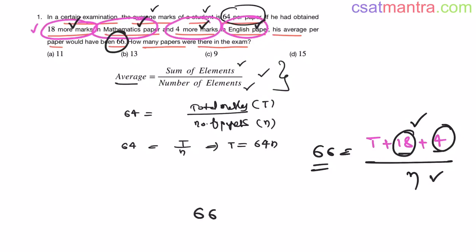Now see, cross multiplication: 66N equals T plus 22. T we know that is 64N. So 66N equals 64N plus 22. Now we have 2N. 66 minus 64 is 2N. So this is 22. Now N is 22 by 2, that is 11.